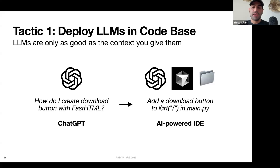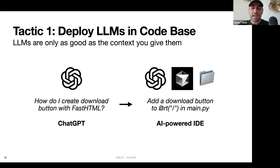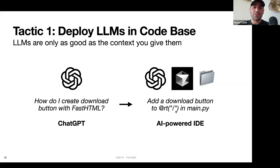With a tool like Cursor, you can cut out a lot of friction in the code generation process and just ask it directly: 'add a download folder to this specific route in main.py.' This is an easy way to 2x, 3x, or more your coding speed — you're not copy-pasting code from one application into another.